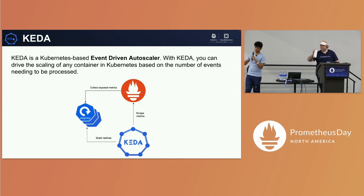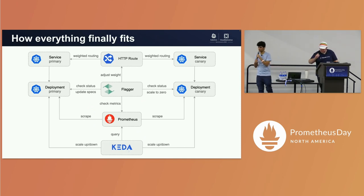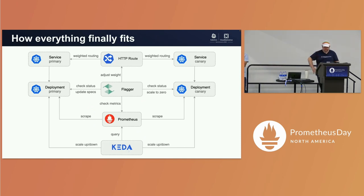You should always have an autoscaler set up. The diagram is pretty much the same as before but with a new component: KEDA. You can see that Prometheus is really driving everything here. If you remove Prometheus, Flagger will not be able to determine whether your version 2 is performing as expected.